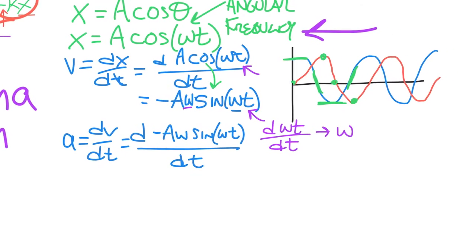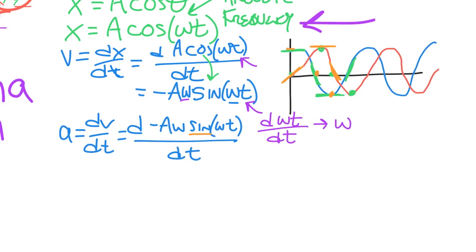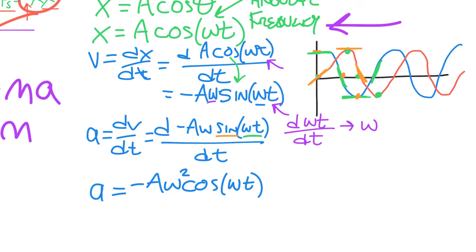We need the derivative of the sine function. Looking at the graph: where the slope of sine is 1, cosine is 1; where the slope of sine is 0, cosine is 0; where the slope of sine is minus 1, cosine is minus 1. So the derivative of sine is cosine. Applying this and the chain rule again, acceleration = −Aω² cosine(ωt).